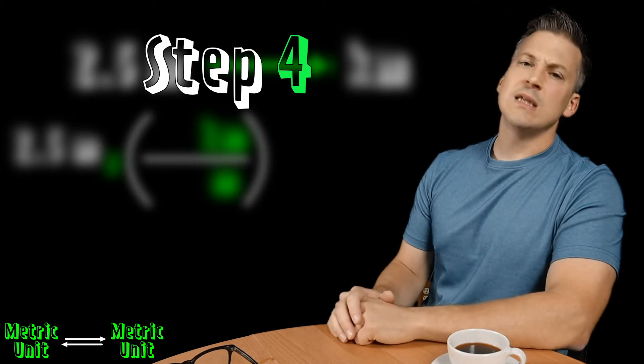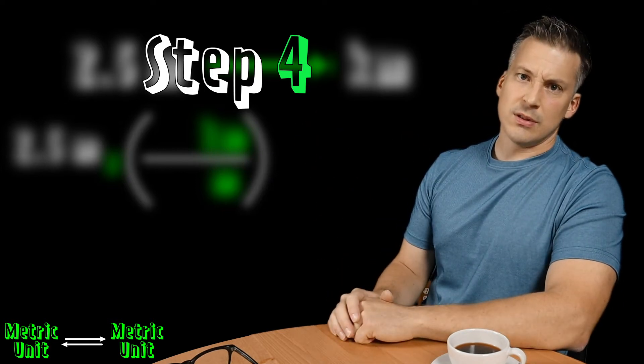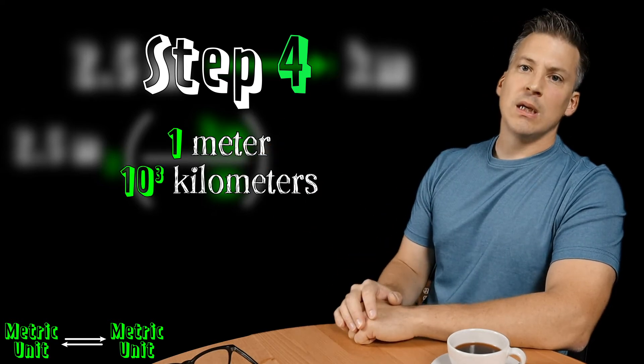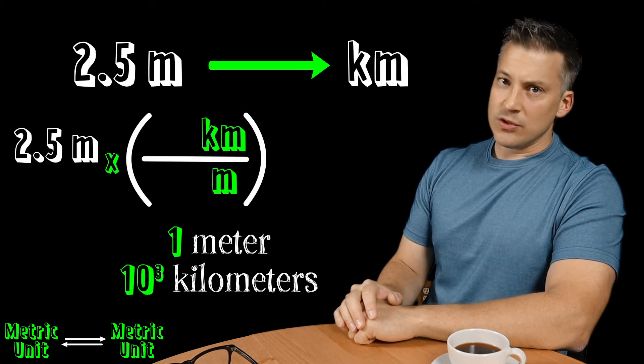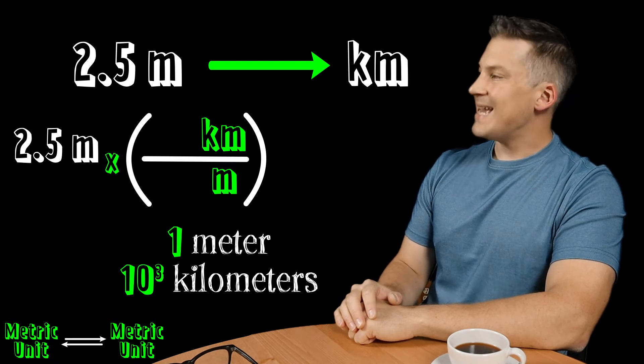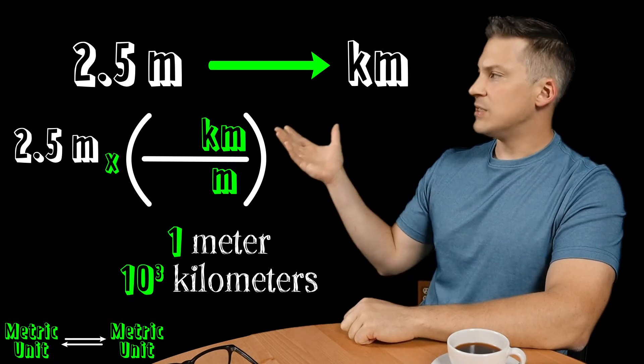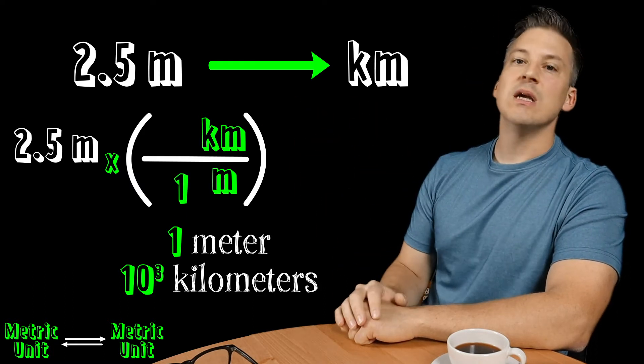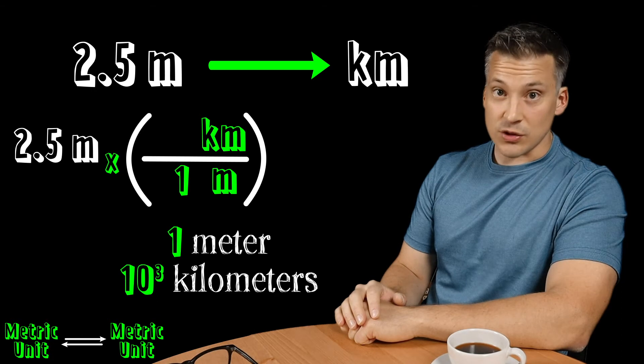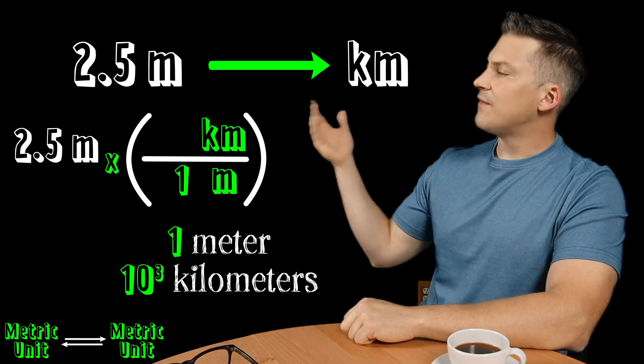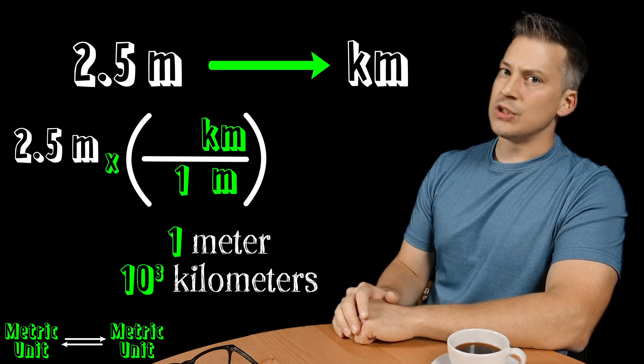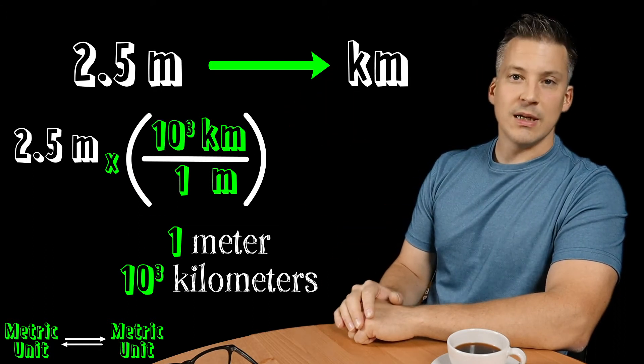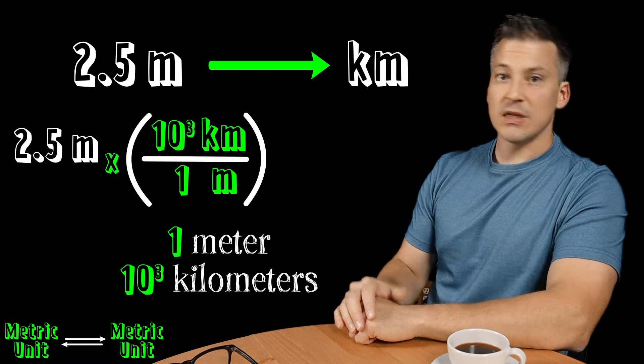What we need to do now is we need to take the values of the meter and the kilometer. What we do with those values from the metric table is we take the value we see. So for example, meter has a value of one. So we're going to take that value, plug it in with the meter into our conversion fraction. And then we're going to take the value that we see for kilometer here, which is 10 to the third. I'm going to take that and plug it on in where the kilometer is in our conversion fraction.